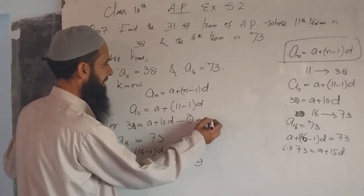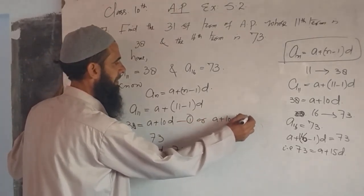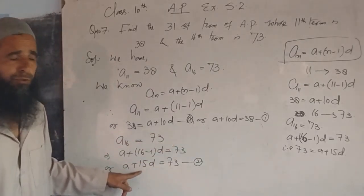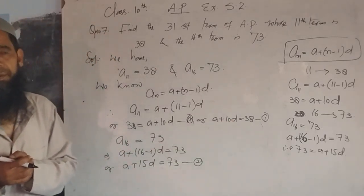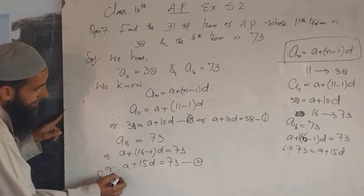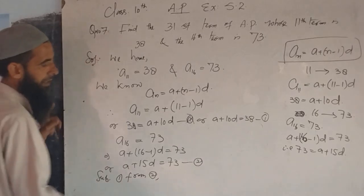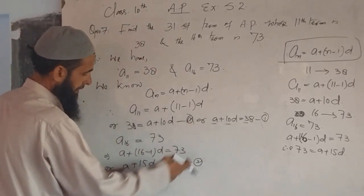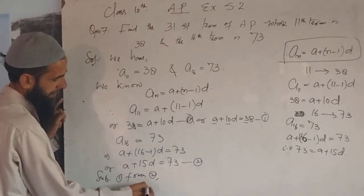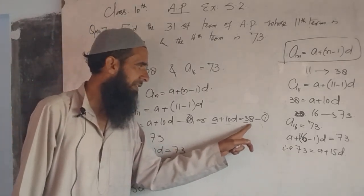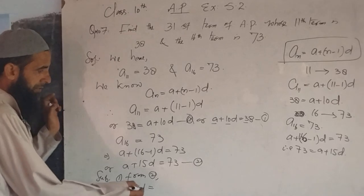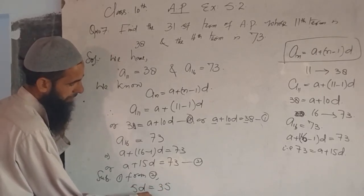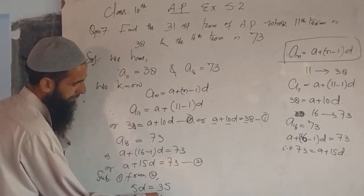We write equation one as: a plus 10d = 38. Now subtracting equation one from equation two: 'a' cancels out, 15d minus 10d gives 5d, and 73 minus 38 gives 35. So 5d = 35, therefore d = 35 divided by 5, which equals 7. The value of d is 7.